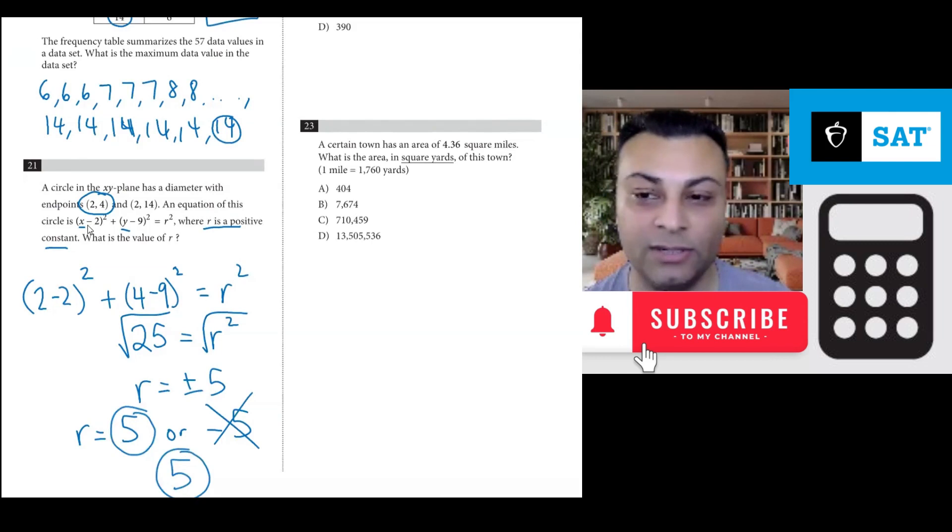This is actually the equation of a circle, and r is the radius. The radius is a positive number. But even if we didn't know this was the equation of a circle, we could just plug in the values. They tell us r is positive, so the answer is 5.